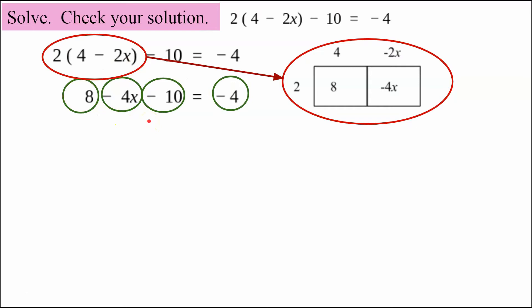Our goal is to have a variable term and a constant term. So I know because I have three terms here that I must have like terms that can be combined. So 8 and negative 10 are both constant terms and can be added.